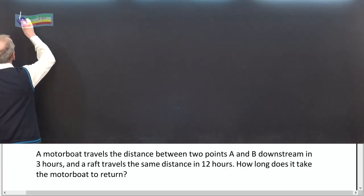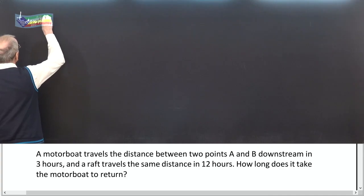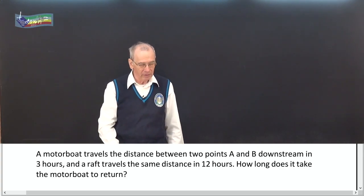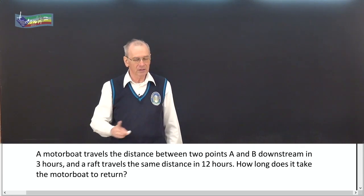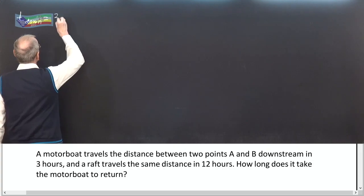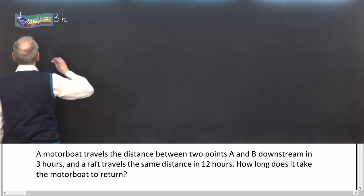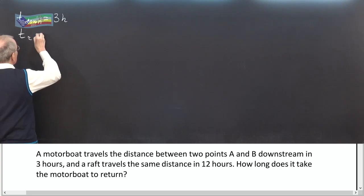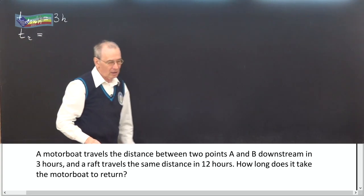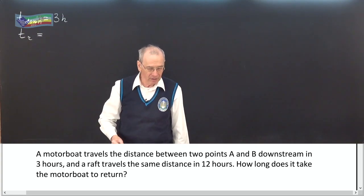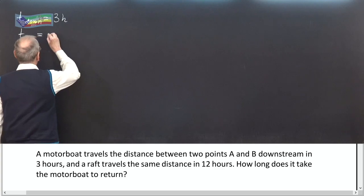Let T-down be the time of travel of the motorboat downstream. It equals 3 hours. And T-raft is the time to travel the same distance for the raft, which is 12 hours.